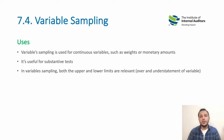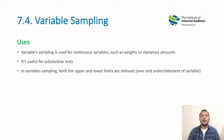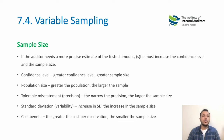In variable sampling, we use both upper and lower limits, which set the threshold under which we can determine to what extent it is acceptable to have a deviation and to what extent it is not acceptable. Accordingly, if we have to adjust our sample size, similar to attribute sampling, the variable sampling size can be determined based on certain factors.